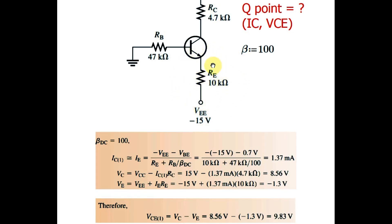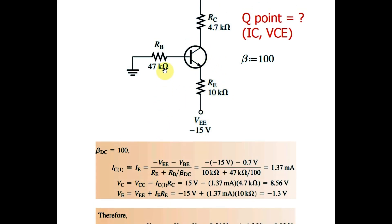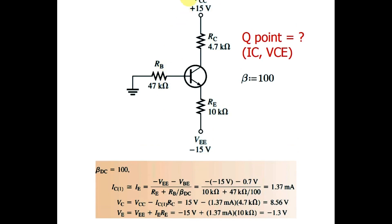What is VC if you apply KVL in this loop? Voltage across this collector is given by VC equals to VCC minus IC times RC. So 15 volt minus 1.37 milliampere times 4.7 kilohm, you will get 8.56 volt which is VC.